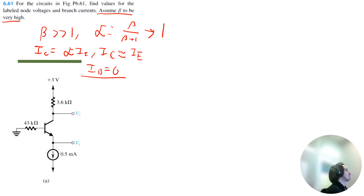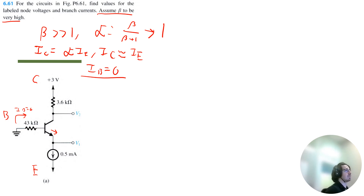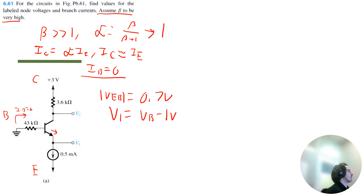Let's take a look at circuit A. We have a PNP transistor, so the collector is on top, the base is in the middle, and the emitter is on the bottom — it's PNP because the arrow is pointing out. We're grounded and we have no current traveling across the base, which means this resistor is doing nothing. If there's no current conducting, there's no voltage drop. For PNP transistors, the voltage drop between emitter and base is 0.7 volts, so V1 equals VB minus the absolute value of VEB, which is 0 minus 0.7, giving V1 equal to negative 0.7 volts.